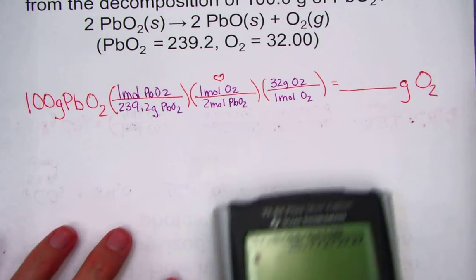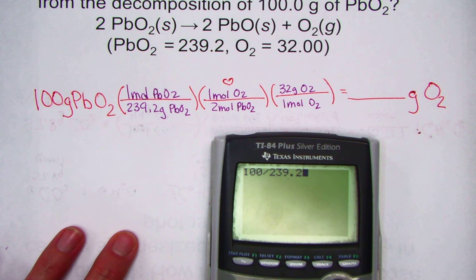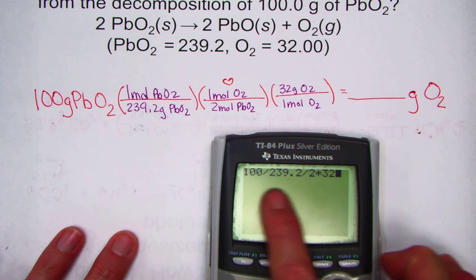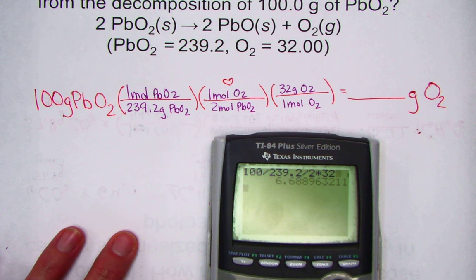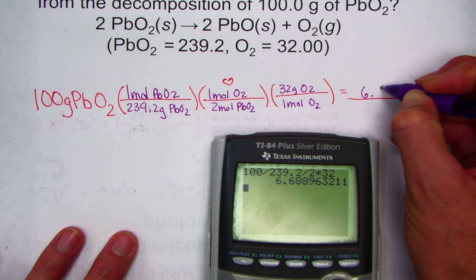They even did the hard part for us in this slide and set up the molar mass, saving us the addition off the periodic table. When I hit this, I hope you will with me: 100 divided by the molar mass of 239.2 times 1 over 2 times 32, the key sequence through those three steps.